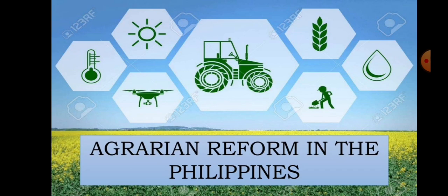First, we have Agrarian Reform Policies, which I am going to discuss for this session. Second, under Chapter 4, is the Philippine Constitution — we will be studying four types: the 1899 Malolos, the 1935, the 1973, and the 1987 Constitution. The third topic under Chapter 4 is Taxation, which is also the last topic under Social, Political, Economic, and Cultural Issues in Philippine History.